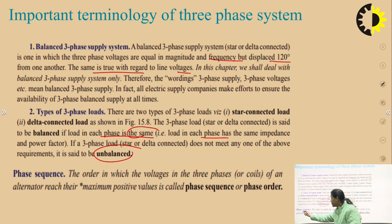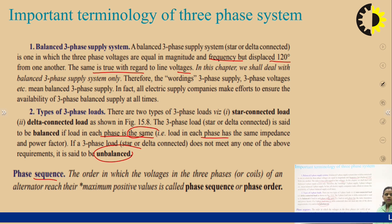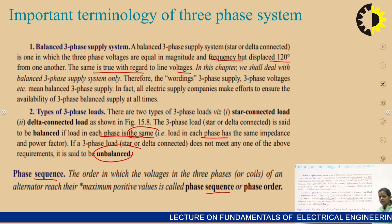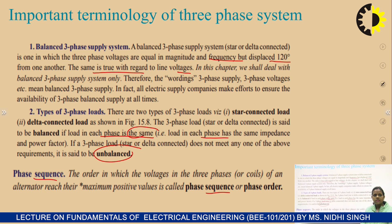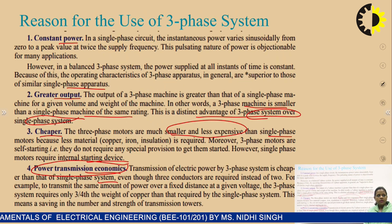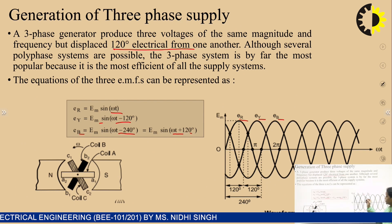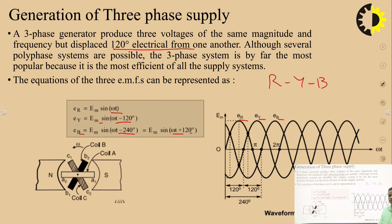The next important term is phase sequence. The order in which the voltages in the three phases of an alternator reach their maximum positive value is called phase sequence or phase order. Importantly, by changing the phase sequence we can change the direction of rotation of a motor. For the waveform shown, the phase sequence is R, Y, B — ER reaches its peak first, then EY, then EB.